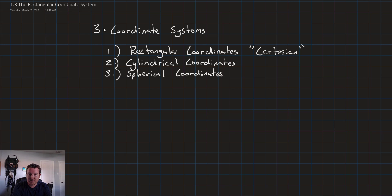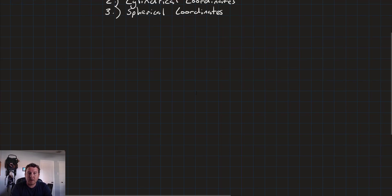Next is the cylindrical coordinate system, and finally, the spherical coordinate system. Now, in this lesson, we are going to focus primarily on the first system, the rectangular or Cartesian coordinate systems. We'll talk about cylindrical coordinates and spherical coordinates later on in upcoming lessons.